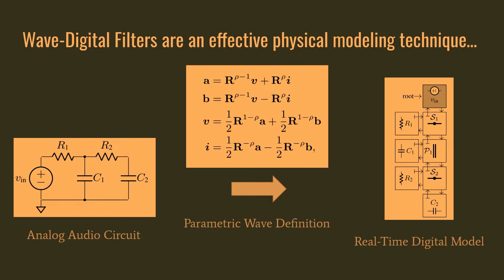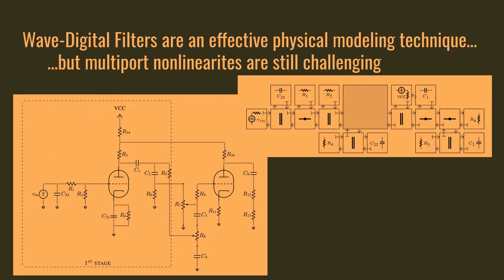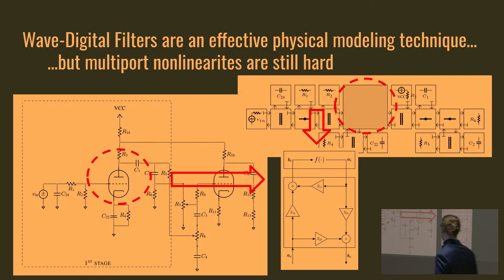However, wave digital filters get into some trouble when you start to try and treat the multiport nonlinearities case. There are a lot of methods being worked on to address this, and Alberto was talking about one on Monday. For example, when you start to try and treat a tube, it gets really challenging. You start to encounter transcendental equations, delay-free loops that are not immediately resolved by the structure. And you can see, while it's really easy to treat the linear parts of this circuit—the voltage sources, capacitors, resistors—I've left this giant gray box where we're trying to treat the triode of the first stage. And this is our idea of where we'd like to start applying machine learning.